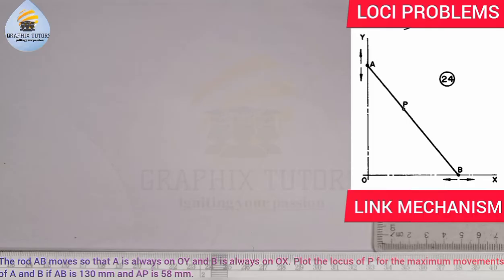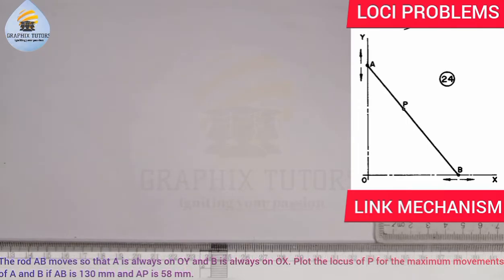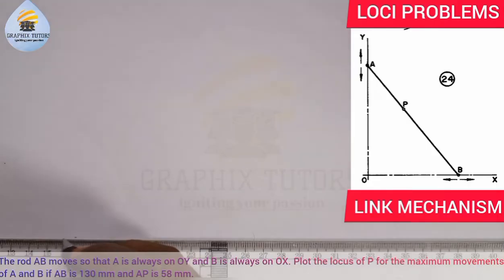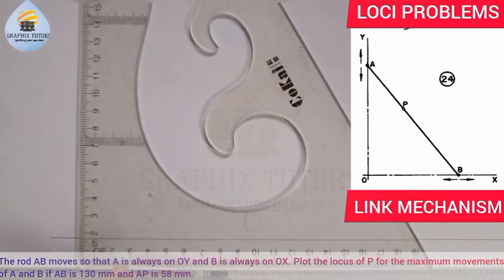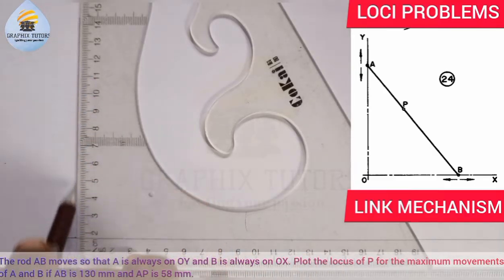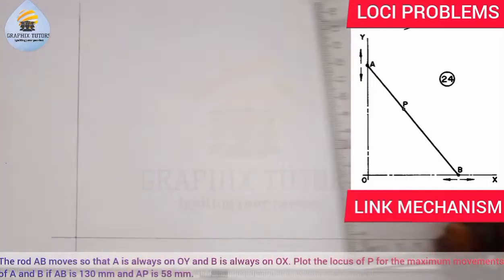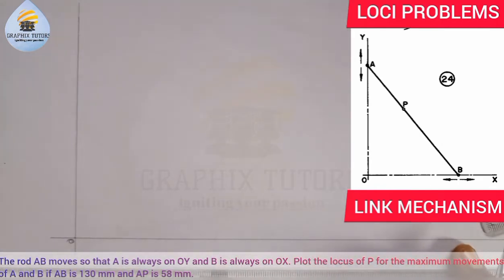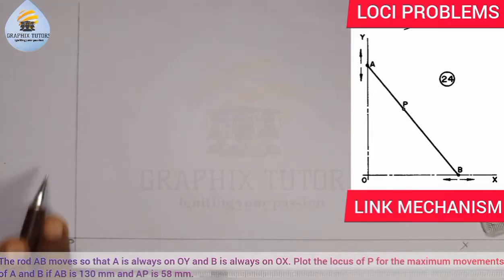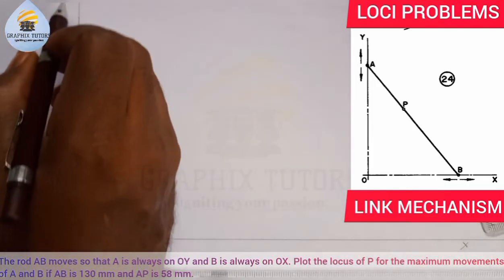The first thing you have to do in this kind of question is to draw your OX and OY. What I mean by OX and OY: you will draw your horizontal line from this point at any given distance, and you're going to draw your vertical line at any given distance also this way. This point here is our point O. Along this axis we'll call it the X axis, and along this axis we'll call it the Y axis.